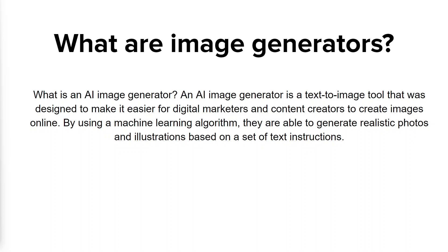An AI text-to-image generator often makes use of a machine learning technique called artificial neural networks that can receive input in the form of words, which it then processes to generate an image. The entire process takes a few seconds, so you can see the results of your work almost immediately.